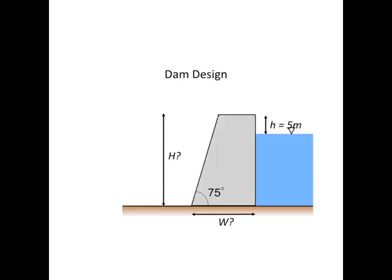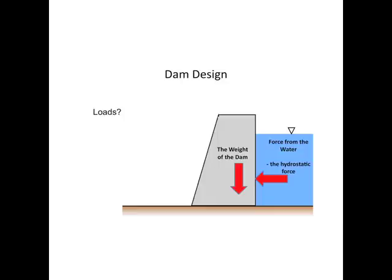Let's fix the freeboard at about five meters and choose an angle of 75 degrees — then all we need to worry about is how big H and W are. The dam itself has a weight acting roughly through its center of gravity, which is to the right-hand side, because the cross-section is trapezoidal. The force from the water acts at a third of the way up from the floor of the reservoir — it always does that in still water, because the pressure distribution is triangular: zero at the surface, maximum at the bottom. The center of gravity of that triangle is at one third up.